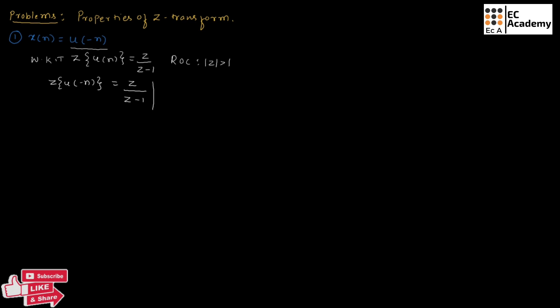In this equation, we need to replace Z with 1 by Z, since it is U of minus n. If we replace Z with 1 by Z, we will get 1 by Z divided by 1 by Z minus 1. So the Z-transform of U of minus n will be equal to 1 divided by 1 minus Z, with ROC magnitude of Z greater than 1.